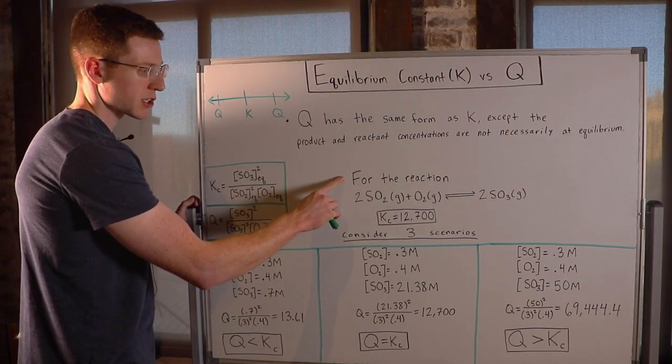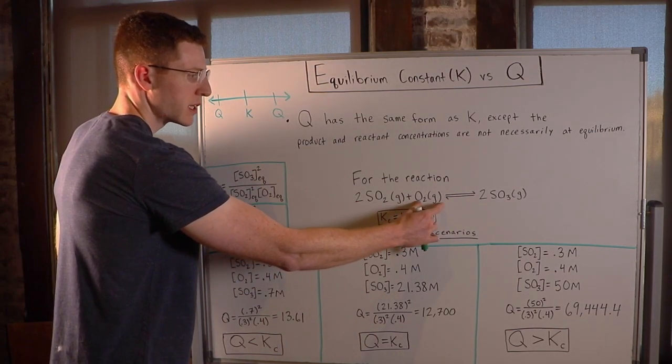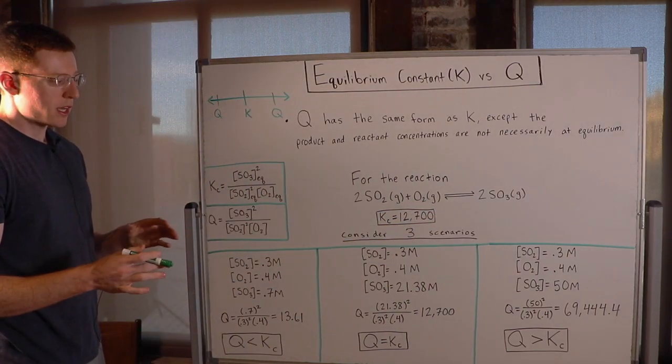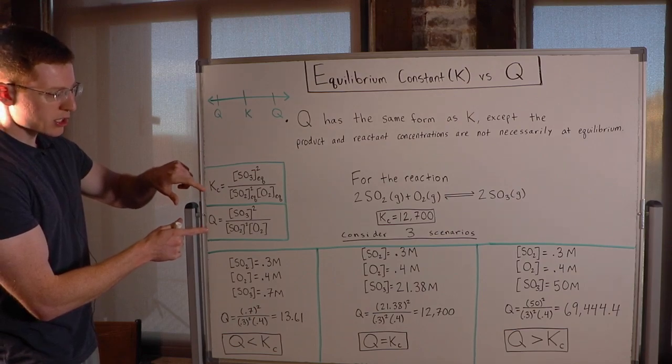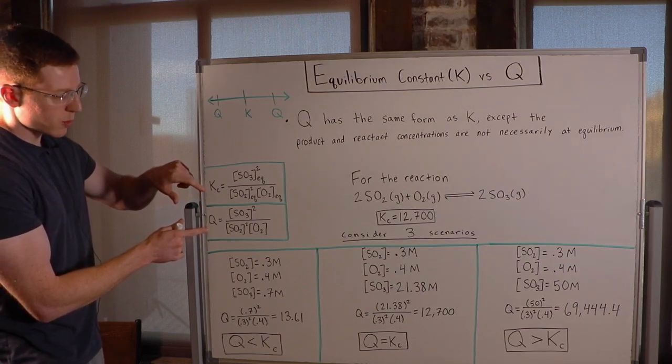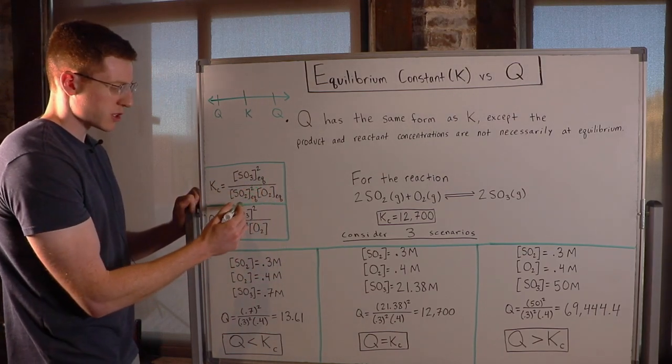So I have an example reaction here. 2SO2 gas reacts with O2 gas, and they're in equilibrium with 2SO3 gas. So I went ahead and wrote Kc and Q in for this reaction. Notice they're both in the same form with the products over the reactants to their respective stoichiometric coefficients as their exponents.